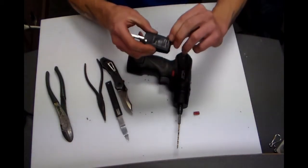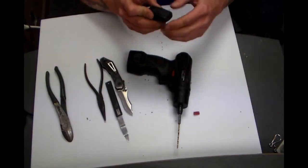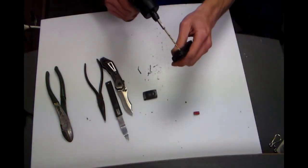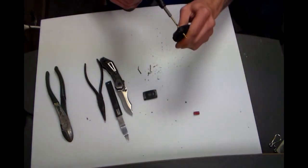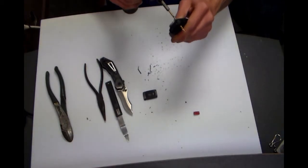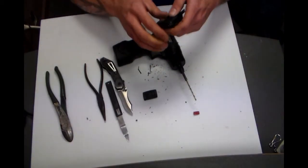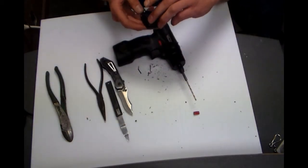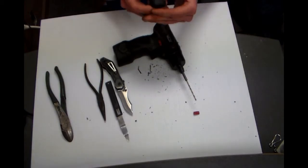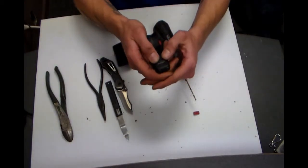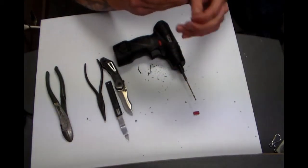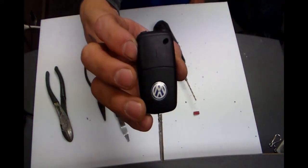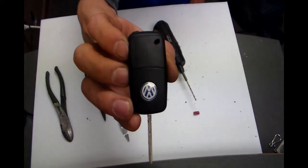Now in that one I nicked the button pad a little bit, but you can bring that hole over. Put the button pad back on. And now you have a hole to put a ring or a hoop through your Volkswagen key.